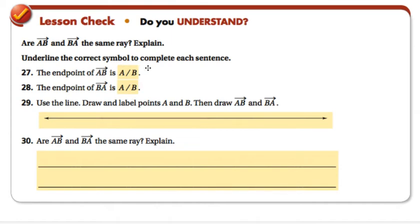Are AB and BA the same ray? Explain. Underline the correct symbol to complete each sentence. The endpoint of AB is, well, the endpoint of AB is A. It's always the first letter that they give you. The endpoint of BA is B. It's always that first letter tells us what the endpoint is. And then it tells us, use the line, draw and label points A and B, and then draw ray AB and BA.